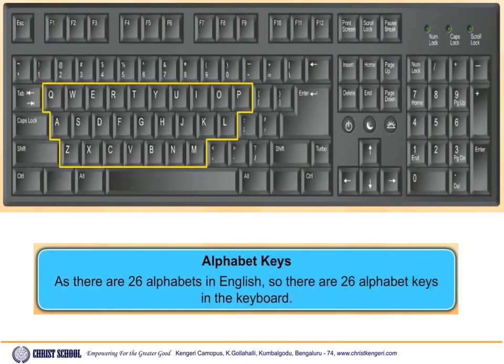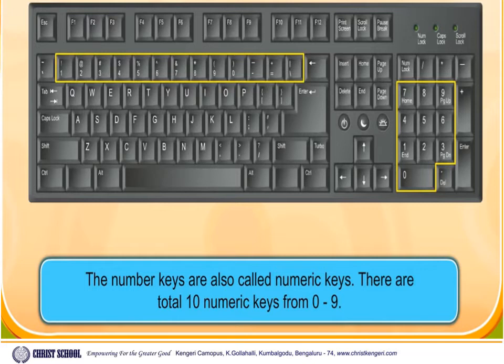Alphabet keys: as there are 26 alphabets in English, there are 26 alphabet keys on the keyboard. Number keys: the number keys are also called numeric keys. There are a total of 10 numeric keys, from 0 to 9.